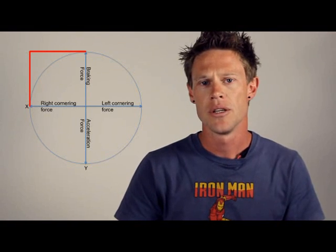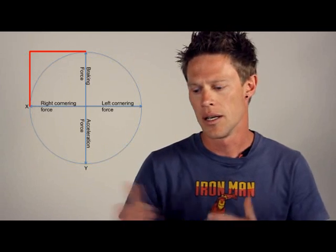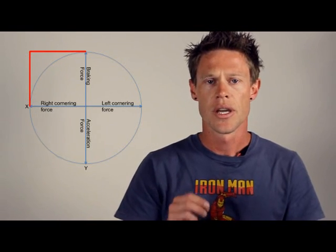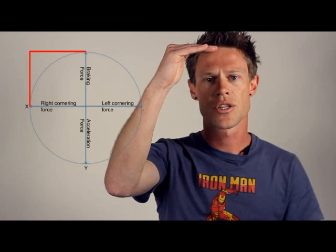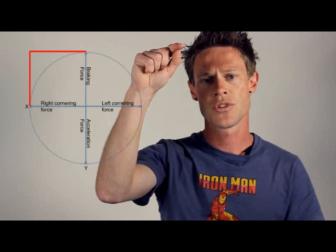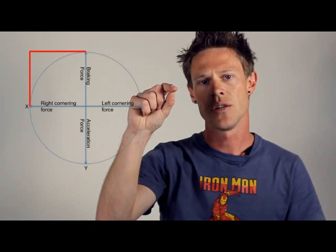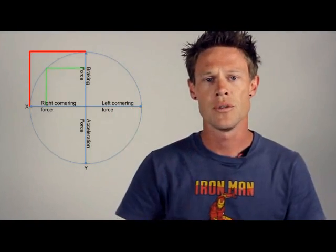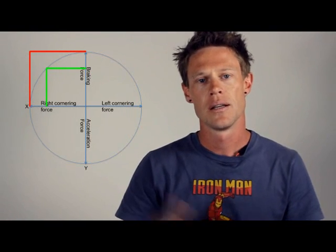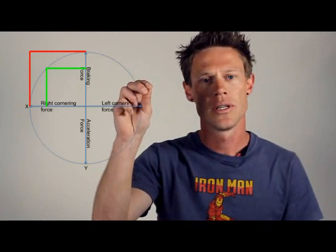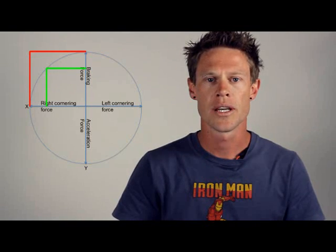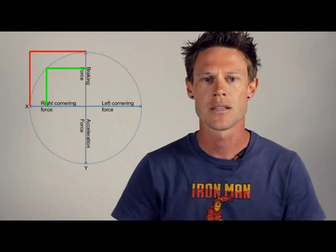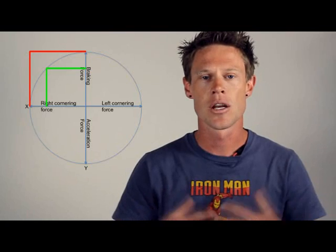Anything outside of that circle is going to be a loss of grip. That means that at any given point in time, you cannot use 100% lateral force — a turning action — and 100% braking or accelerator force. As soon as you go 100% deceleration and start turning, you're going to run straight out of the circle. You'd have to decrease your braking effort to stay within the circle, using perhaps only about 60% deceleration and 60% lateral force. Different cars have different braking capabilities and different tyres have different grip capabilities. Anything outside of that circle is a loss of control.